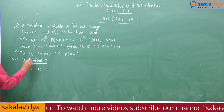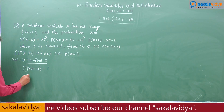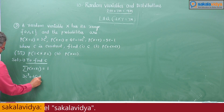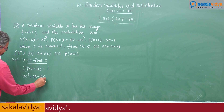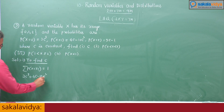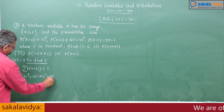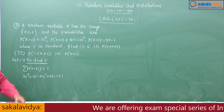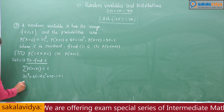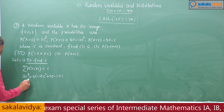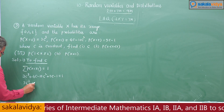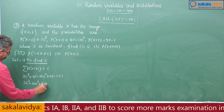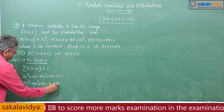That means 3c cubed plus 4c minus 10c squared plus 5c minus 1 must equal 1. Rearranging and bringing 1 to this side: 3c cubed minus 10c squared plus 9c minus 2 equals 0.